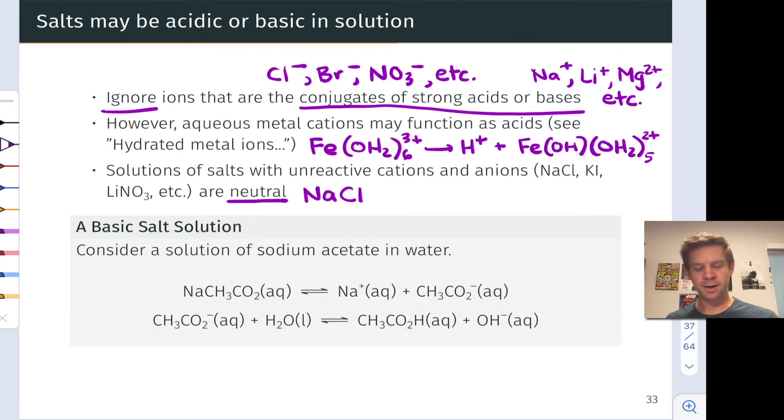In the box here at the bottom, we have an example of a basic salt solution, sodium acetate. In the first reaction, we're considering dissociation of sodium acetate when it's dissolved in water. We take solid sodium acetate, an ionic compound, throw it in water, it dissolves. The resulting species we get are Na+, that's the cation, and the acetate anion CH3CO2-.